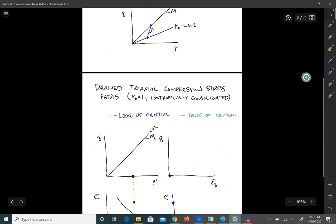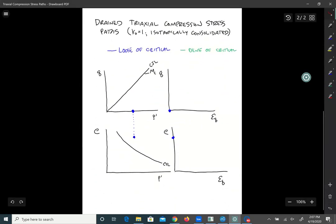All right, so what we should do now is practice drawing these stress paths. So here's a set of four plots. We have drained triaxial compression stress paths. And I'm going to assume K naught is one here. So we're isotropically consolidating the soil. And I'm going to draw two, the one that's loose of critical state and then the one that's dense of critical state.